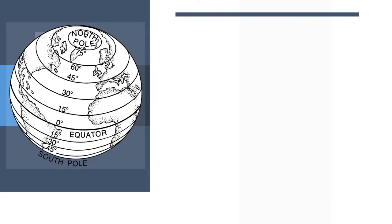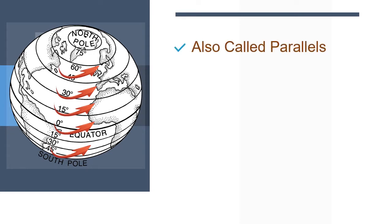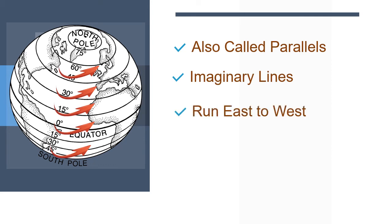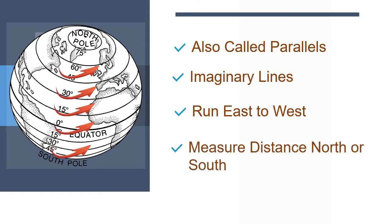As we discussed in my previous video, Lines of Latitude, also called Parallels, are imaginary lines that divide the earth into two parts. They run east to west but measure the distance north or south.